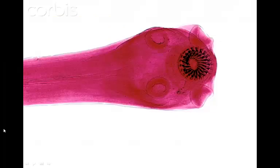Some parasitic flatworms have modified feeding structures called hooks and suckers, which enable them to stay attached to their host. Some parasitic flatworms have a reduced digestive system and feed on the blood and other body tissues of their host. Other parasitic flatworms lack a digestive system entirely. Because they are so thin — like a single layer of cloth — and are surrounded by the nutrients of their host's intestines, these parasites can absorb nutrients directly through their skin.